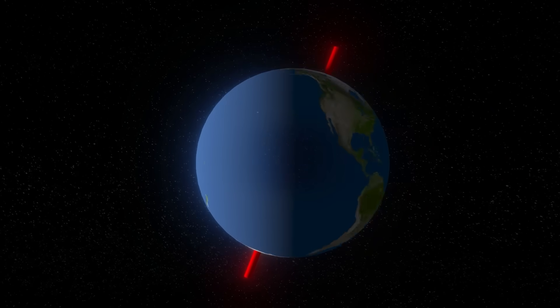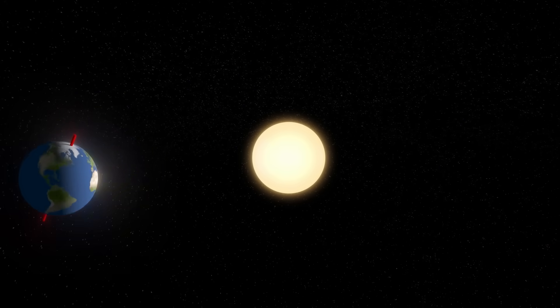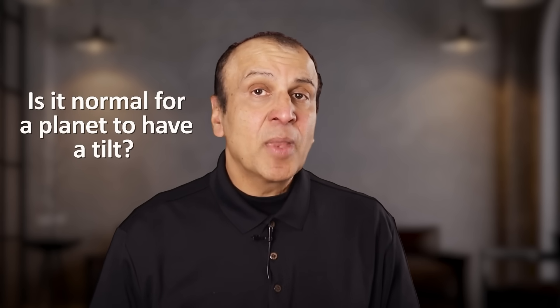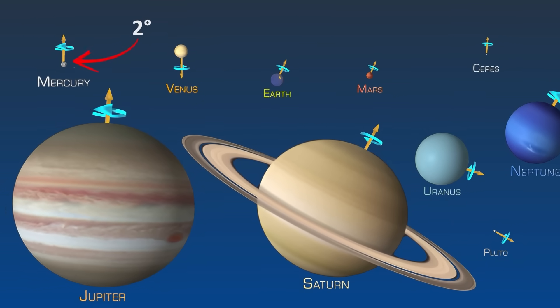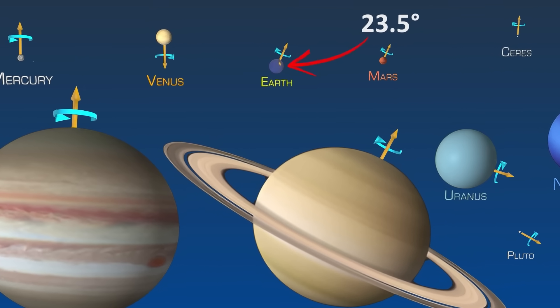In case you didn't know, the earth has an axial tilt on its orbit around the sun, and this turns out to have a dramatic effect. It's the reason we have different seasons in the northern and southern hemispheres. You might ask, is it even normal for a planet to have a tilt? Well, it appears so. Most planets in our solar system have it. Mercury is the only one that has nearly no tilt at 2 degrees. The earth's tilt is 23.5 degrees.